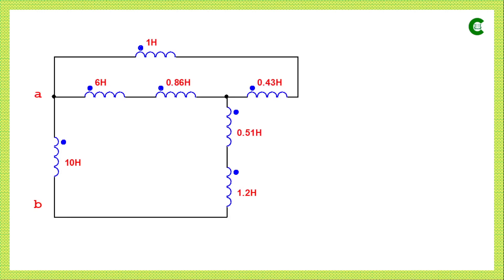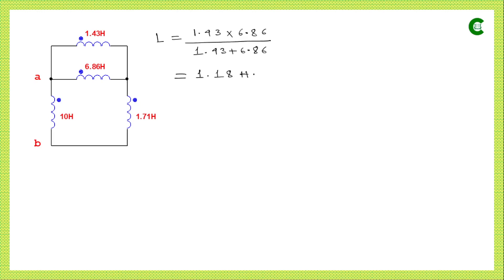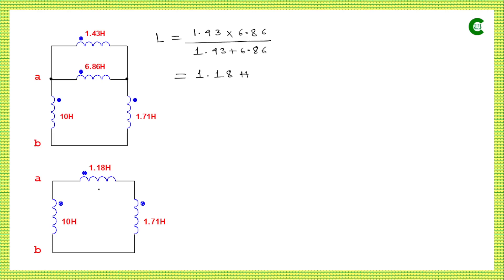After modifying the circuit, we can see that two inductors are connected in series with a simplified value of 6.86 Henry, and another two inductors in series with a simplified value of 1.71 Henry. In the next modified circuit, these two inductors are connected in parallel, so using the parallel formula: (4.43 × 6.86) divided by (4.43 + 6.86) ≈ 1.18 Henry.